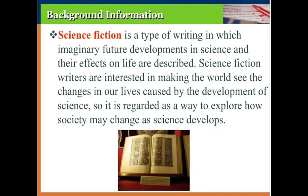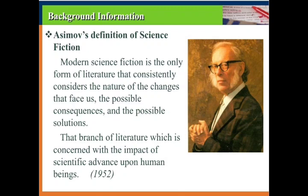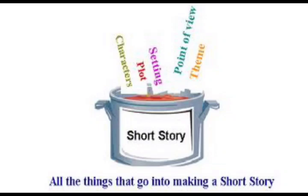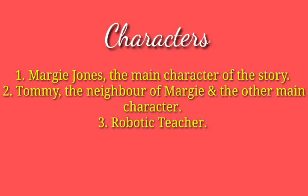Now you have to know how many characters are in the story. There are three main characters. The first one is Margie Jones, who is the main protagonist. Another protagonist is Tommy. And there is a robotic teacher who explains how they can study through online. This story goes into the future — what study will be like at that time.